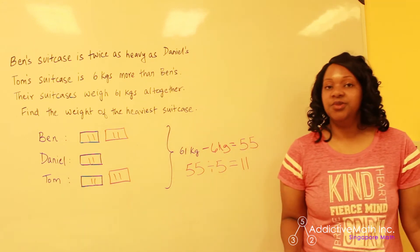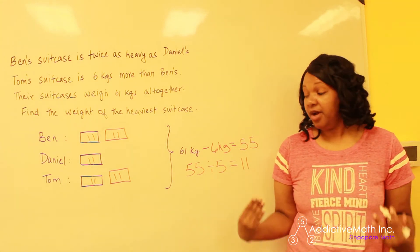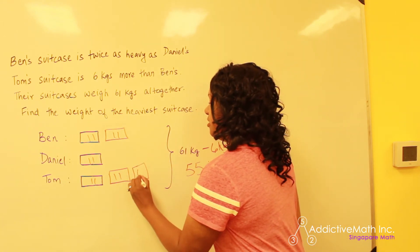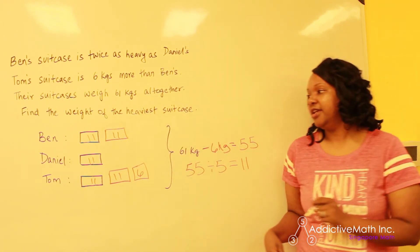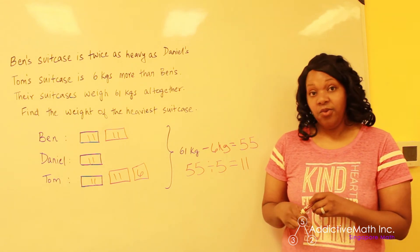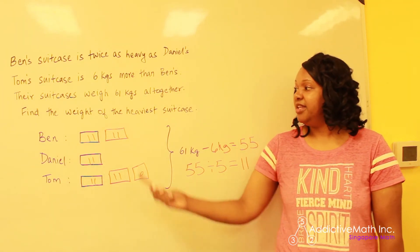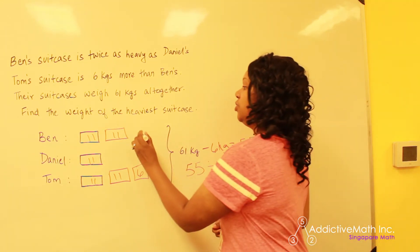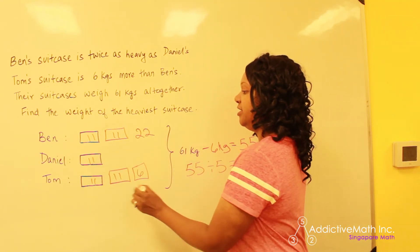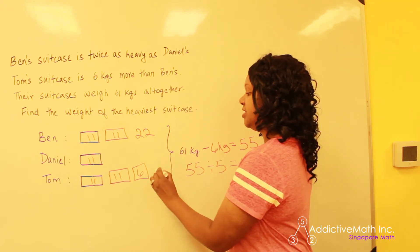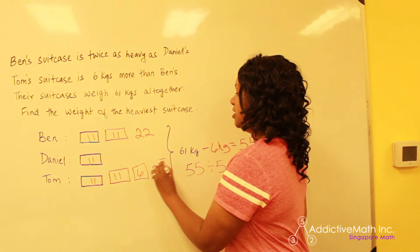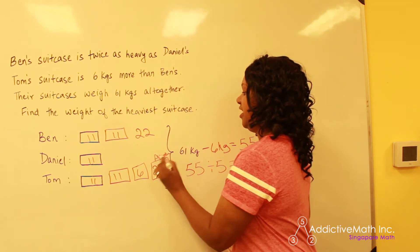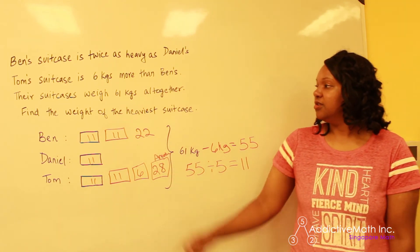Then to find the answer, we just have to put the problem back the way it was. So the only other thing we had originally was a six here for Tom's suitcase. So right now we have the answer. We know that Ben's suitcase is 11 plus 11, which is 22. Daniel's is 11. 11 plus 11 plus 6 is 28.